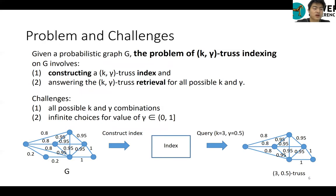Therefore, we are interested in the problem of k-gamma-truths indexing. Given a probabilistic graph G, the problem of k-gamma-truths indexing on G involves constructing a k-gamma-truths index and answering the k-gamma-truths retrieval for all possible k and gamma.